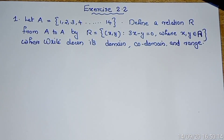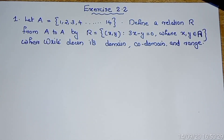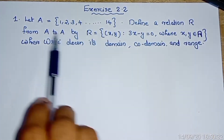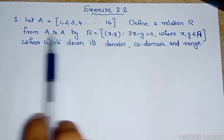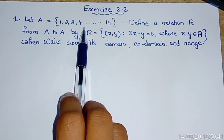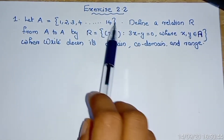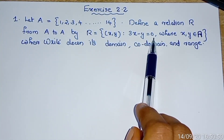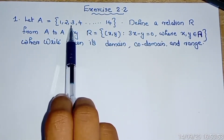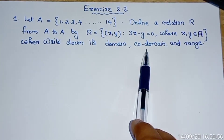First question: let A be equal to the set {1, 2, 3, 4, ..., 14}. Define a relation R from A to A by R equals the set of ordered pairs (x, y) such that 3x minus y equals 0, where x, y are elements of A. Write down its domain, co-domain and range. Here, A is the set of natural numbers from 1 to 14, and the relation between x and y is 3x minus y equals 0.